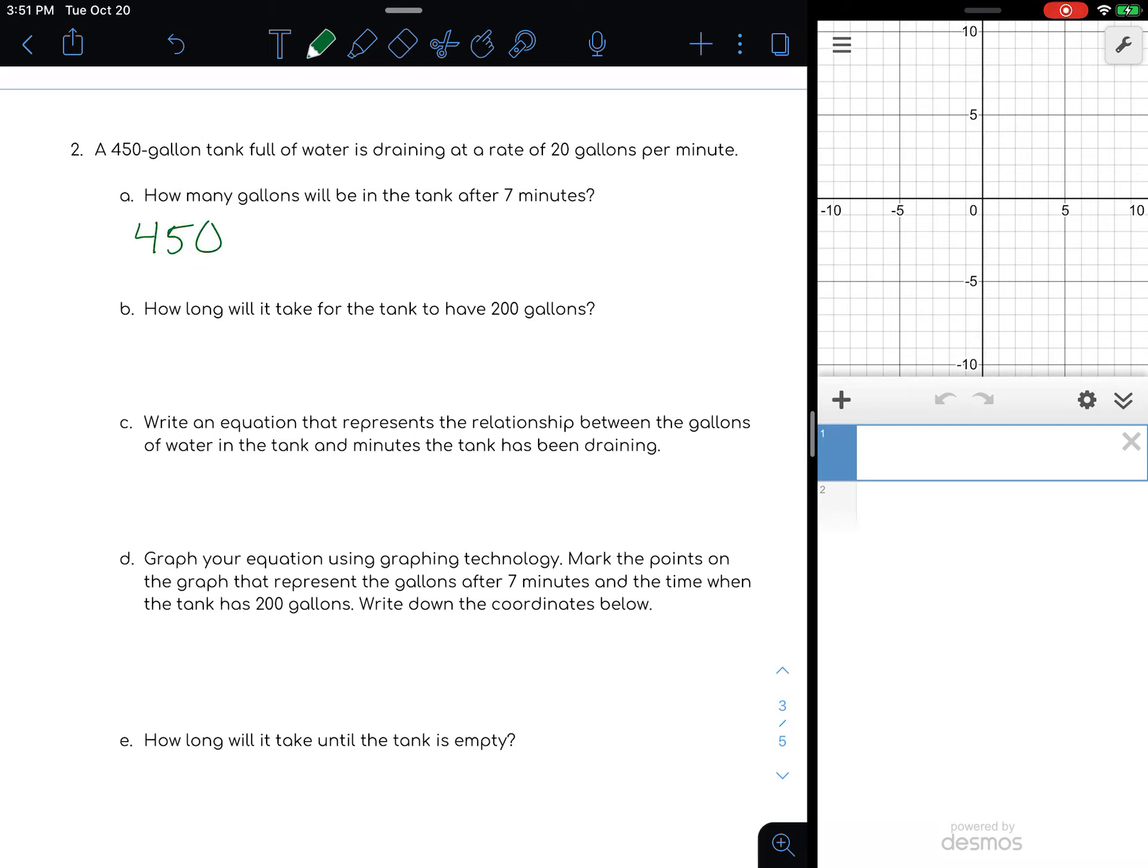We're starting with 450 gallons and it's draining at a rate of 20 gallons per minute. If it's draining, that means it's going away, getting smaller. So 450 minus 20 times 7 will give us our amount that is left. Let's plug that in: 450 minus 20 times 7, and that's going to equal 310 gallons.